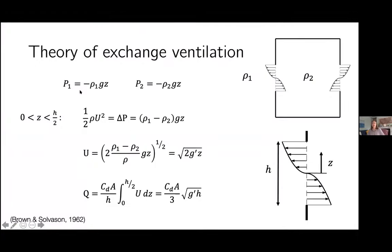You can model this using the theory of exchange ventilation, first described by Brown and Solverson in a 1962 paper. The idea is that inside the room you've got warm air at one density, outside you've got cooler air at a larger density, so the pressure gradients are different either side of the window. This pressure difference drives a flow, which you can model using Bernoulli — essentially energy conservation — giving a speed u as a function of height z away from the interface where inside and outside pressures equalize. Integrating this velocity profile gives the flow rate Q through the window: Q = cd times A times the square root of g-prime times h, where cd is a constant and A is the window area.